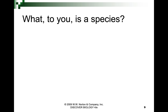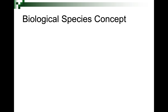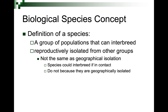So what is a species? How would you define one? We have several different species concepts, and the one you're probably thinking of is the biological species concept — a group of populations that can interbreed are the same species, reproductively isolated from other groups. This is not the same as geographical isolation; species could still interbreed if they came into contact, so they'd still be considered the same species under the biological species concept.